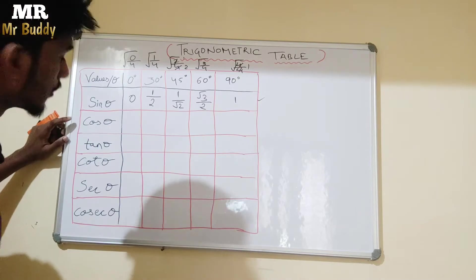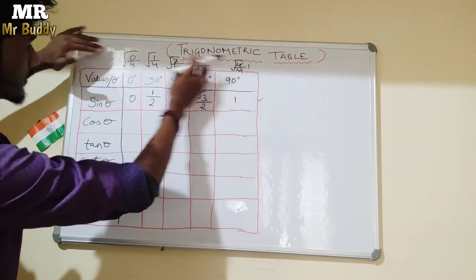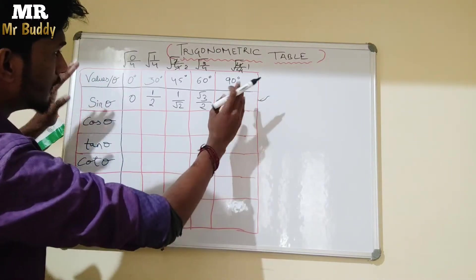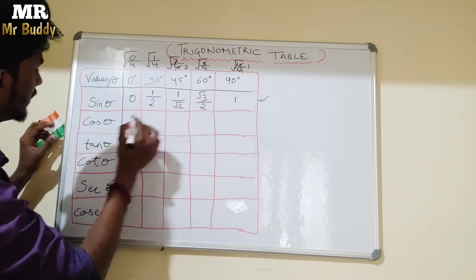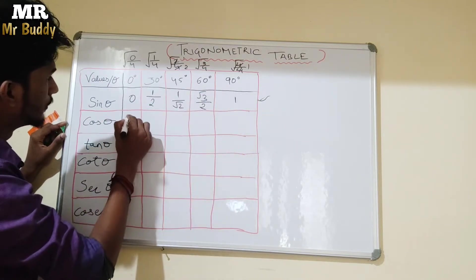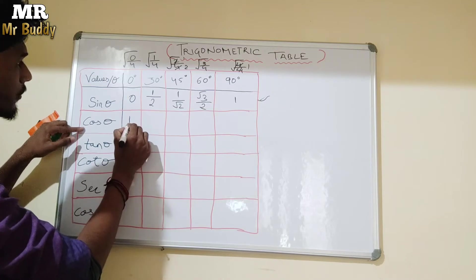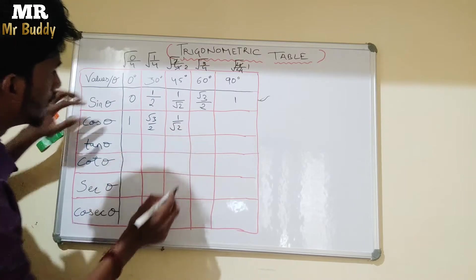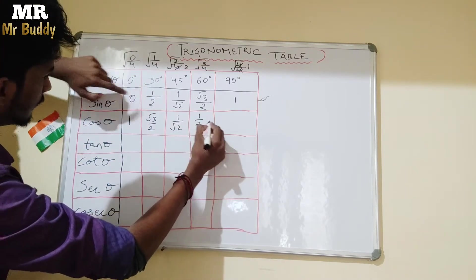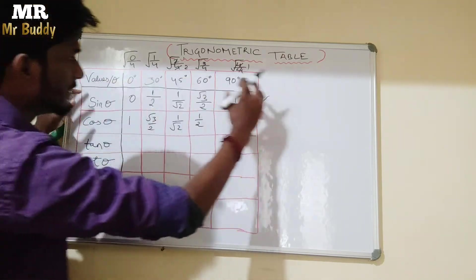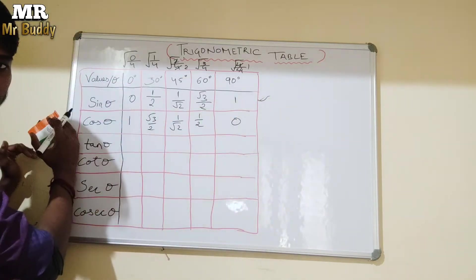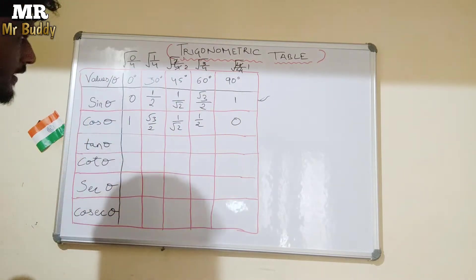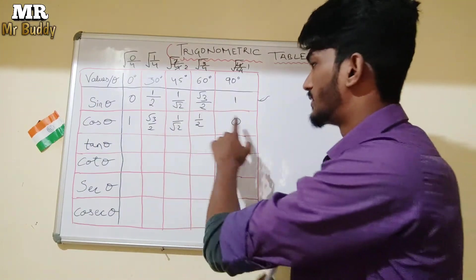Next, we calculate the cosθ values. You can read the sinθ values from right to left to get cosθ. So, sin 90° is 1, which equals cos 0°. Then √3/2, then 1/√2, then 1/2, and last 0. Just reverse the sinθ values and you get the cosθ values.